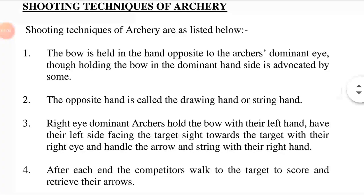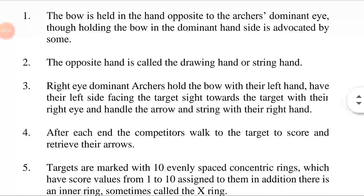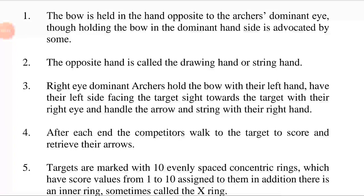Right eye dominant archers hold the bow with their left hand, have their left side facing the target, aim with their right eye, and handle the arrow and string with their right hand. The archers keep the bow in their left hand.